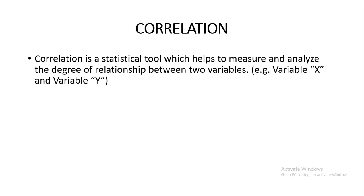Correlation is a statistical tool. We try to find out statistically what is the relationship between two variables. The precondition for correlation is there should be at least a minimum of two variables — one is x and one is y, or we call them a and b.